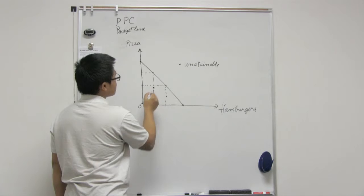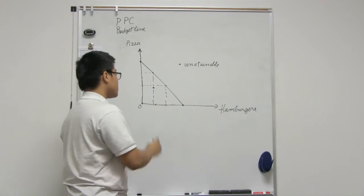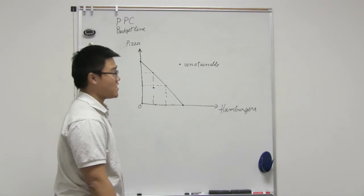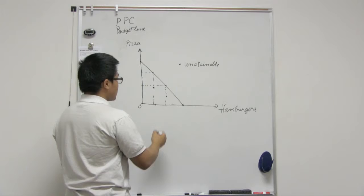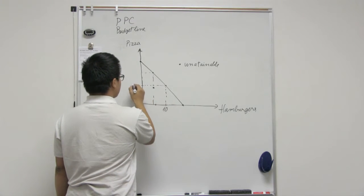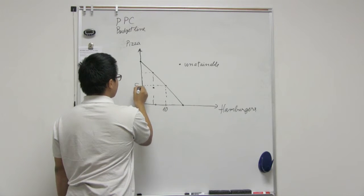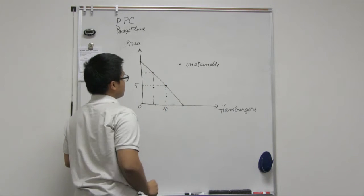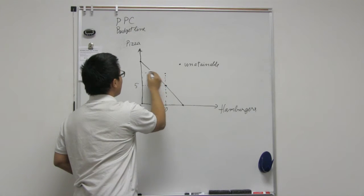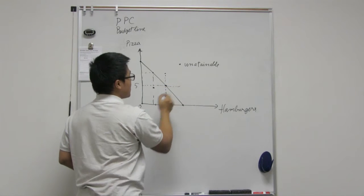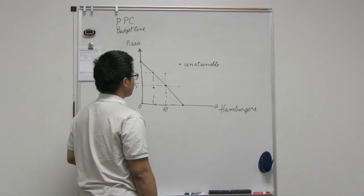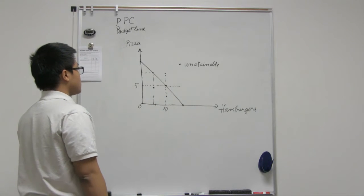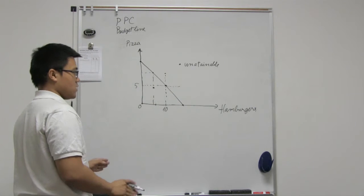Unattainable, or just attainable. Attainable. You can get it. And anything outside of the line will be unattainable because you don't have enough money. So let's say that right now you're consuming 10 hamburgers and five pizzas right there. You already use all of your money because you're on this point. So you can't go out. You can't buy more pizza. You can't buy more hamburgers. So if you're at that point, like any point on the line, you use all of your money.